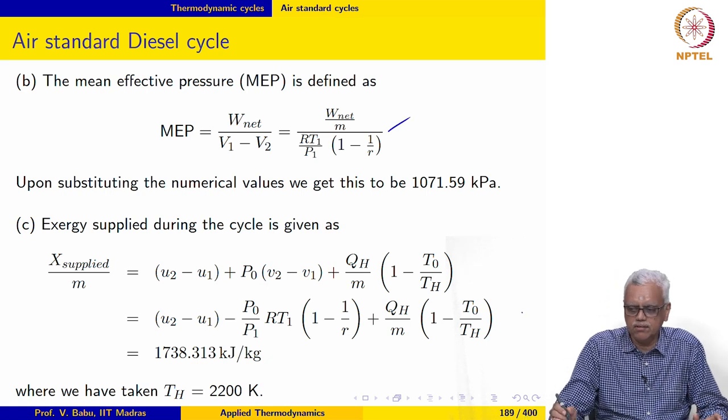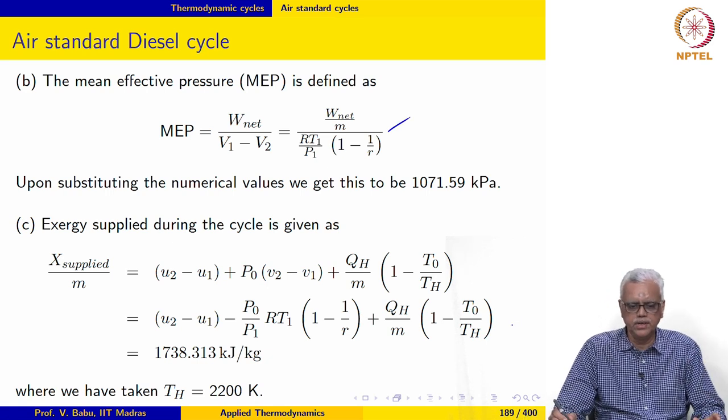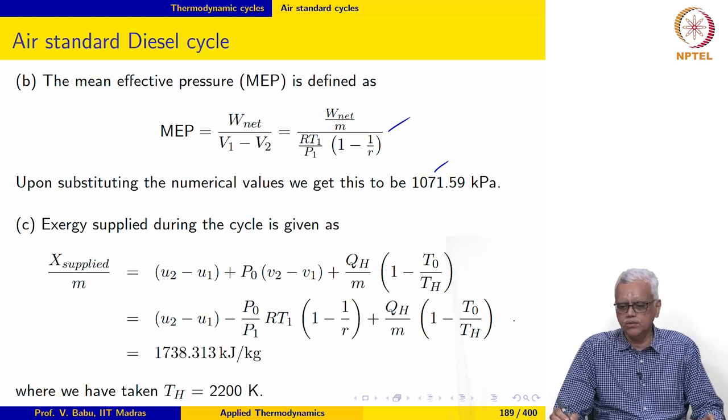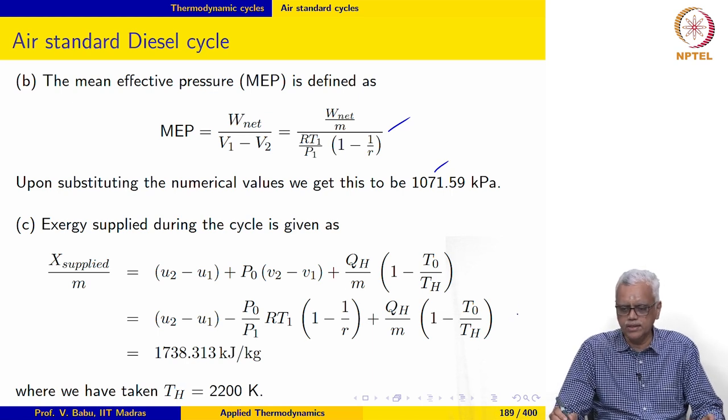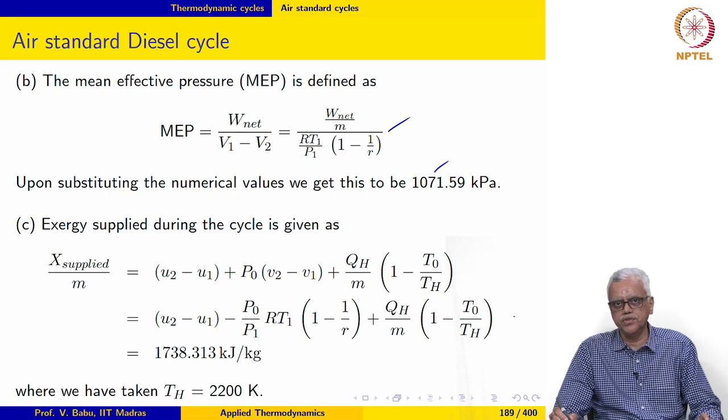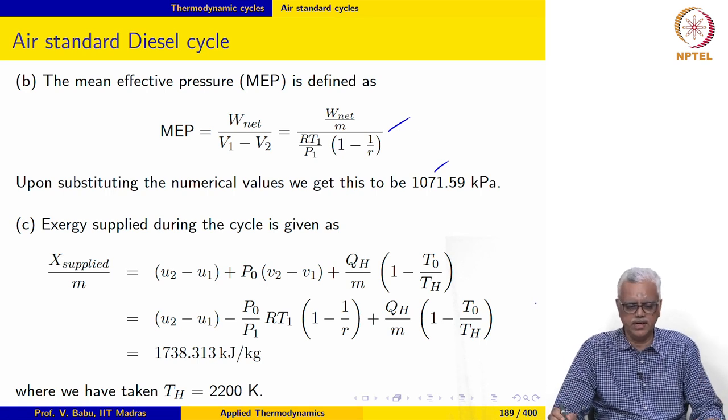Mean effective pressure may be calculated in the same manner as done for the Otto cycle and we get this to be 1071.59 kilopascals, much higher than what we saw for the Otto cycle because the specific power is higher.